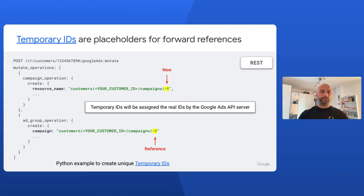A good question now would be: how do I link together entities that have not been created yet? The answer is, by using temporary IDs. If you set the resource name of an entity being created to a negative integer, like minus one in this example, the Google Ads API will assign to it a correct positive ID once the creation has succeeded. You can also use the temporary negative ID as a reference in other entities that you want to be linked to the one you just created. For example, we are creating a campaign with temporary ID minus one and an AdGroup belonging to that campaign. We associate the two by using minus one in the campaign resource name inside the AdGroup creation operation.